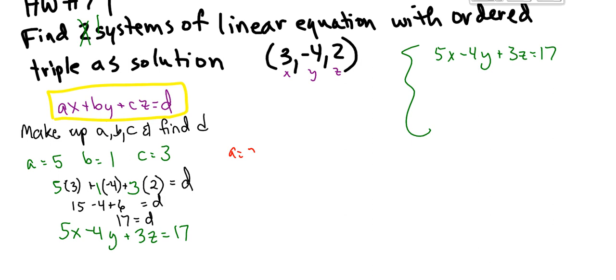So I'm going to take 2 times x, which is 3, plus b, which is 1, times y, which is negative 4, plus 3 times z, which is 2. And that's going to equal d. And when I do this one, I get 6 minus 4 plus 6. And 12 minus 4 is 8. So that's going to be d.